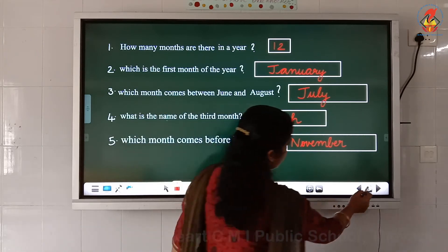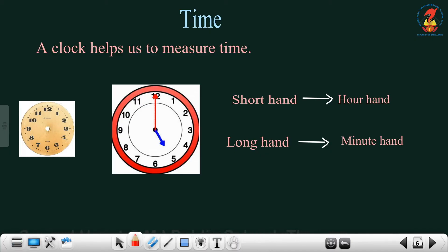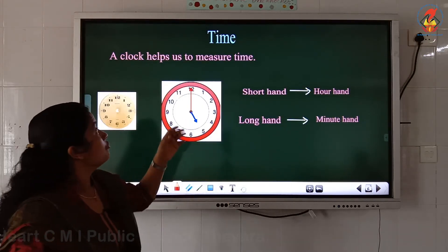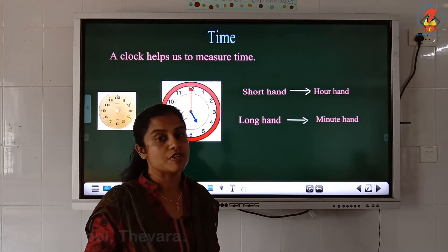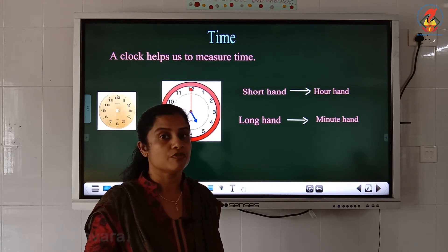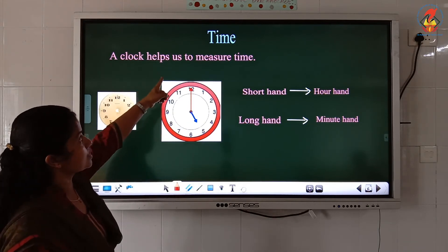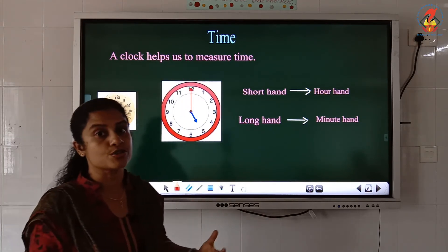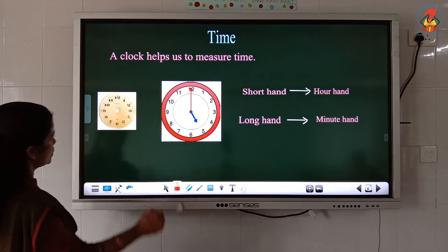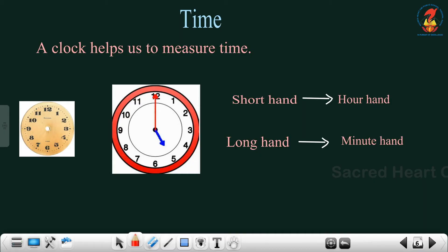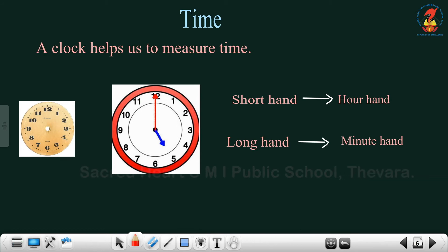Now let's move to the next topic: time. How will you measure time, children? With which instrument will you measure time? We will use a clock to measure time. A clock helps us to measure time. Look here — here you can see the face of a clock. What is written on the face of the clock? You can see numbers from 1 to 12 written on the face of a clock.